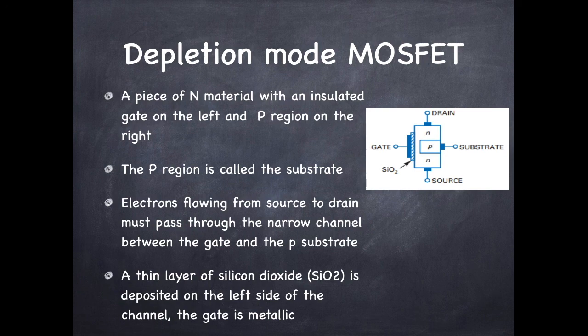This is an insulator which insulates the metallic gate from the channel and this results in negligible gate current even when the gate voltage is positive.